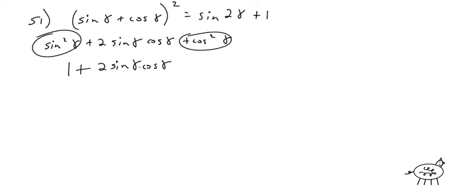And then, of course, you recognize that 2 sine gamma cosine gamma is sine of 2 gamma. So we get sine of 2 gamma plus 1. That's easy.